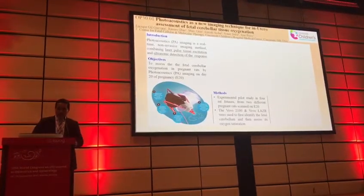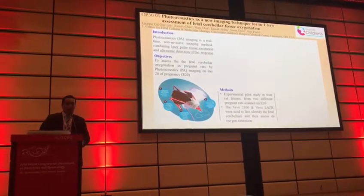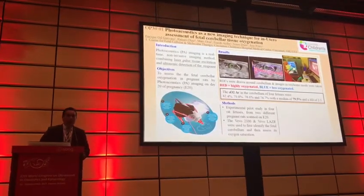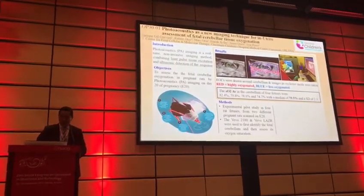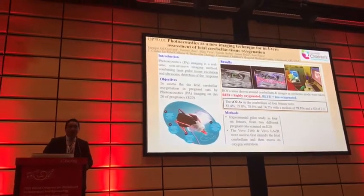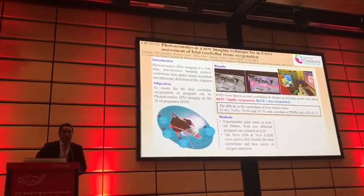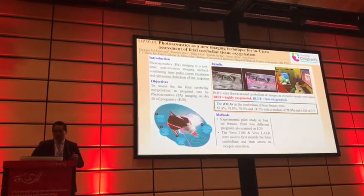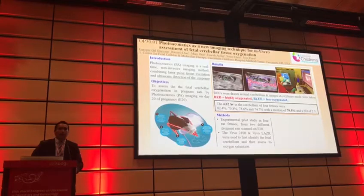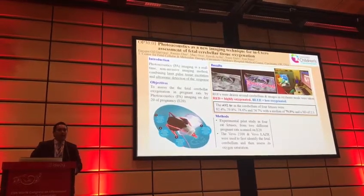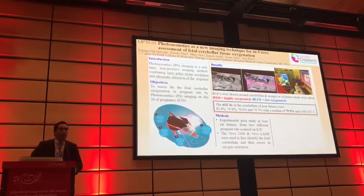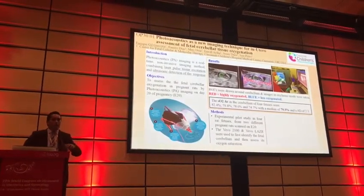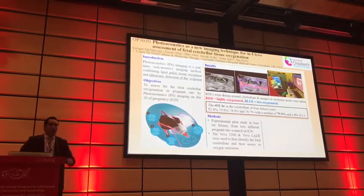This was an experimental pilot study in four rat fetuses from two different pregnant rats, in which we first identified the cerebellum by dropping the region of interest around it, and then assessed its oxygen saturation by identifying the red pixels (highly oxygenated) and the blue pixels (less oxygenated). We focused mainly on the average oxygen saturation, which results from dividing all the oxygenated pixels over the oxygenated and the deoxygenated pixels.